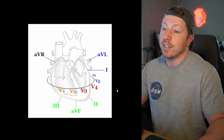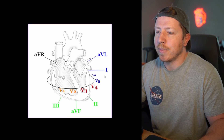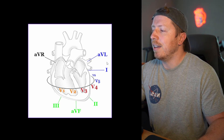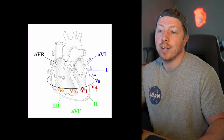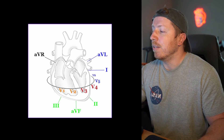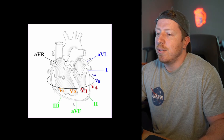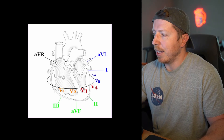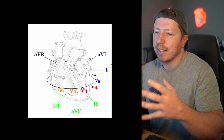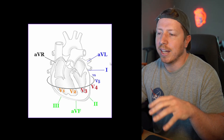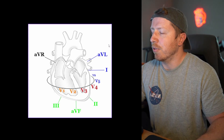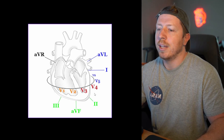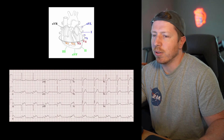Now you can see the color coordinations: aVL, I, V5, and V6 are lateral; V3 and V4 are anterior; V1 and V2 are septal; and II, III, and aVF are inferior. You can see how, just by knowing what the heart looks like and where these leads are in space relative to the heart, you can easily imagine which leads correspond to the lateral, anterior, septal, or inferior regions.